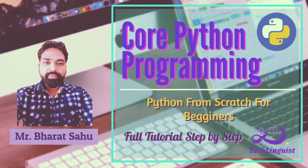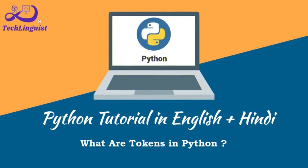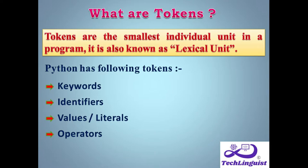Hello friends, welcome to my channel Tech Linguist. In this video we will see what is a token and what all further classifications or types of tokens are available. First we will see what are tokens in Python. Tokens are the smallest individual unit in a program, which is known as a token. It is also known as a lexical unit.